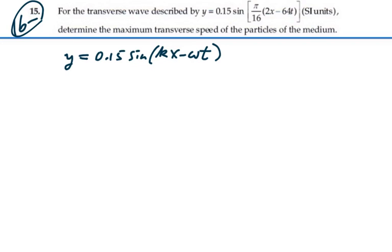If we want the transverse velocity as the derivative of the wave function with respect to time, it's the derivative of the y position with respect to time, and that would be 0.15 cosine kx minus omega t, and then by the chain rule,